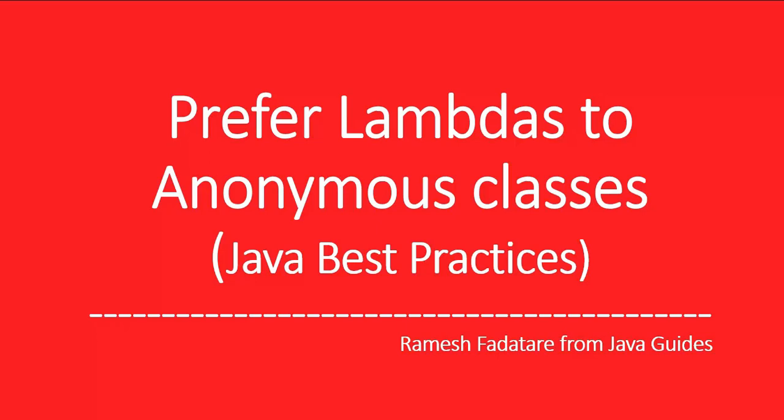Anonymous classes are classes which we can declare and instantiate at the same time. An anonymous class is just like a local class except it doesn't have a name. We use anonymous classes whenever we want a local class to be used only once. In Java 8, lambda expressions were introduced along with functional interfaces, method references, stream APIs, etc.